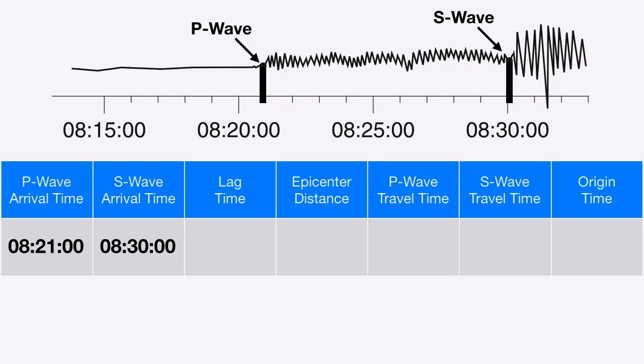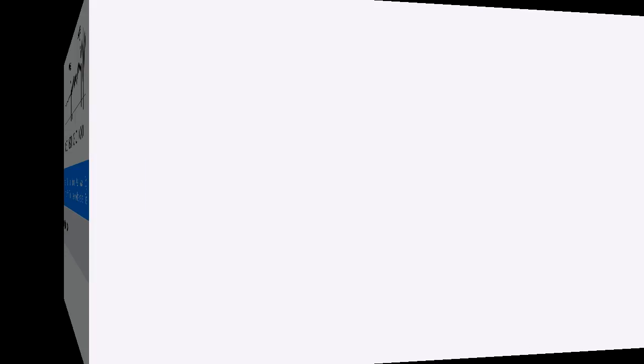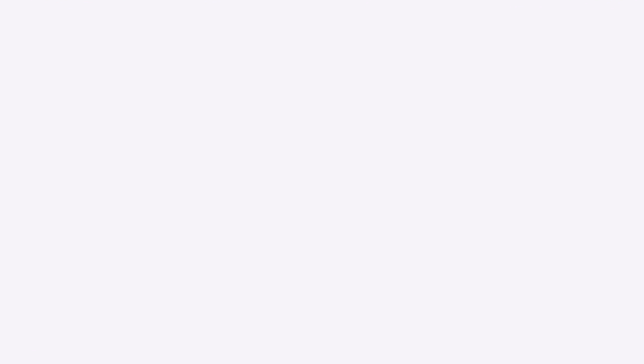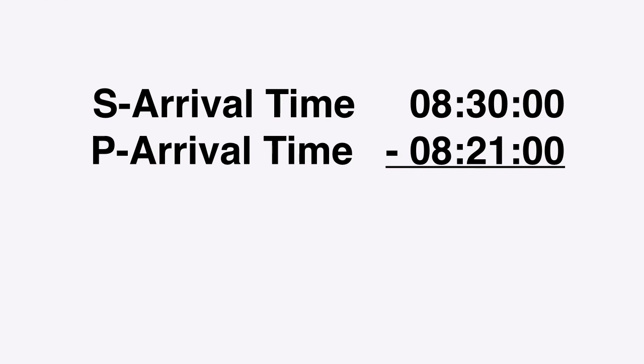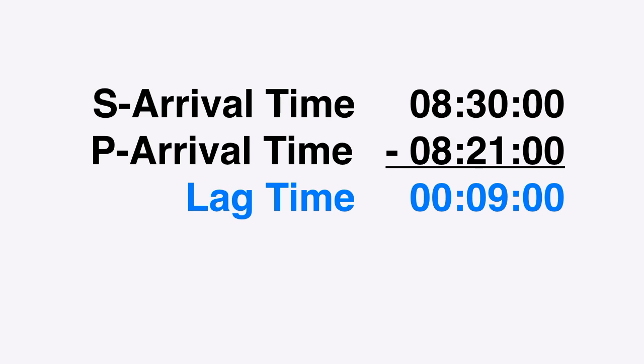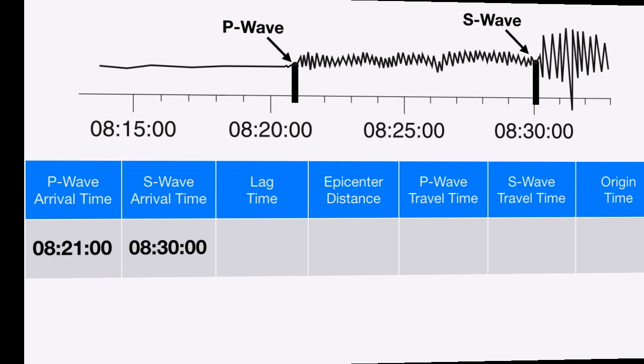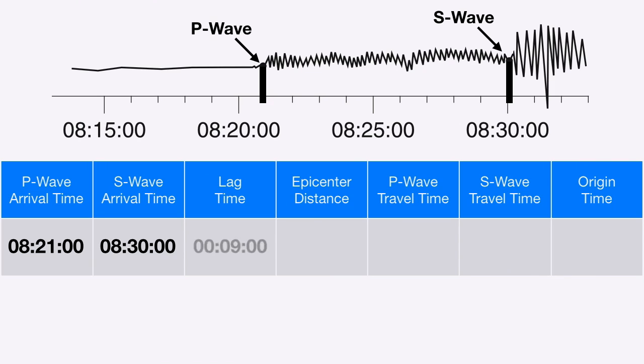Let's calculate the lag time for this earthquake. We're going to take the arrival time for the S wave and subtract the arrival time for the P wave. So we take 8:30 and subtract 8:21, giving us a lag time, or difference in arrival time, of 9 minutes. We'll add that to our chart.